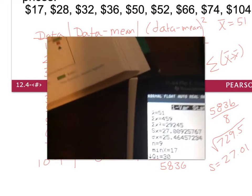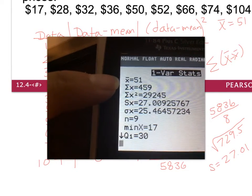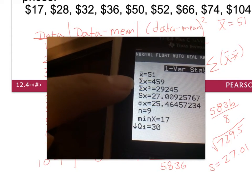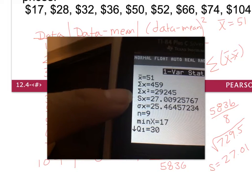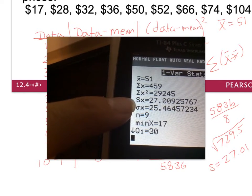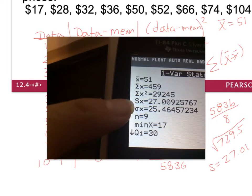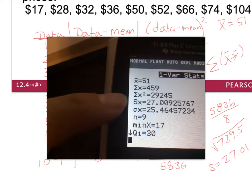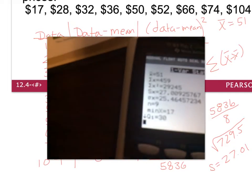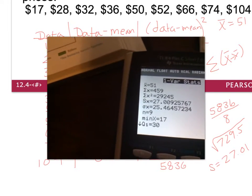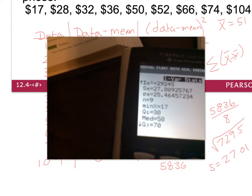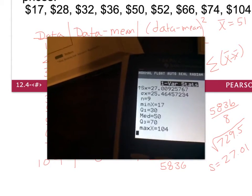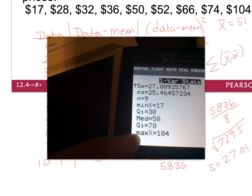A list of results will appear. The first number is x-bar, your mean. You'll also see 459, which is the sum of the x values. The key value to look at is Sx — notice it shows 27.009, which matches our hand-calculated 27.01. You can also scroll down to find your quartiles, median, minimum, and maximum values directly from the calculator.